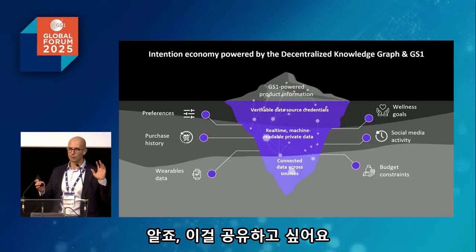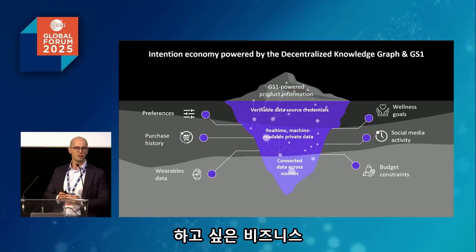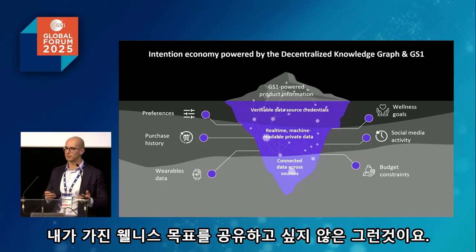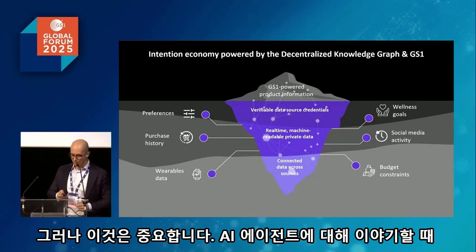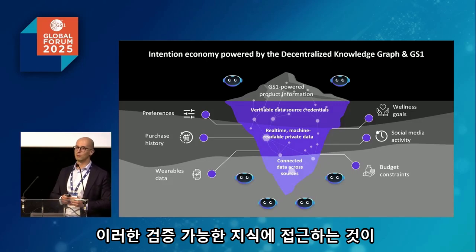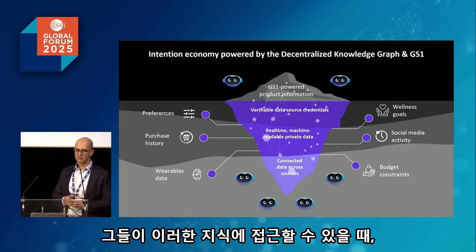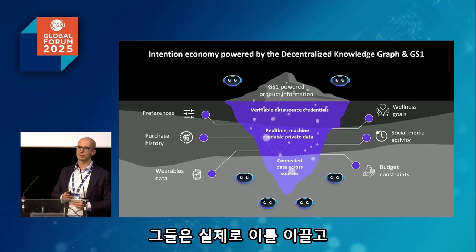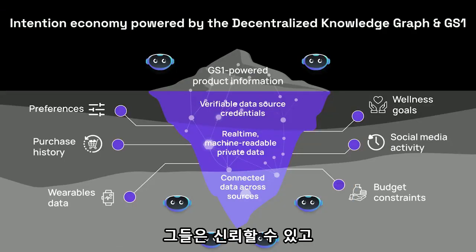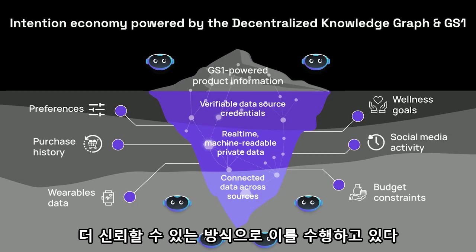Individuals and organizations that issued data get to decide what to share: public, with business partners, or completely private — for example, keeping budget constraints or wellness goals private. But having that access matters for AI agents, because when they have access to trusted, verifiable knowledge, they can genuinely help us understand our intent and execute autonomous actions that are actually what we want — in a trusted and reliable way.